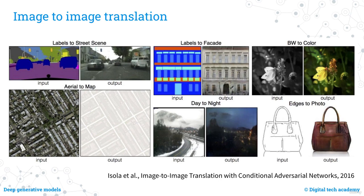An additional interesting function available with generative models is image-to-image translation. Basically, you start from a certain type of image and get the corresponding output image. For example, it is possible to start from labelled images of a road and obtain the corresponding realistic image. Similarly, you can do this starting from a building façade, transform a black-and-white image into colour, convert an aerial view of a city into the corresponding map, or turn a daytime image into the equivalent nighttime scene.